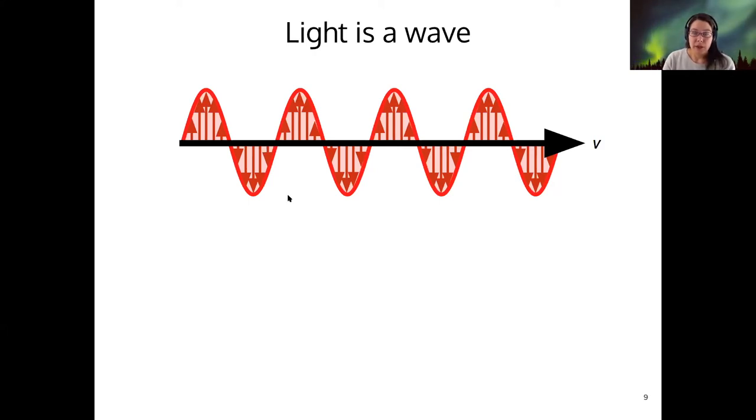So the important characteristics that we can measure here, as we're looking at this, essentially you could think of this as a graph where both dimensions are space dimensions. So we're measuring a distance here as the wave travels, and we're measuring an amplitude here as it oscillates the electric field.